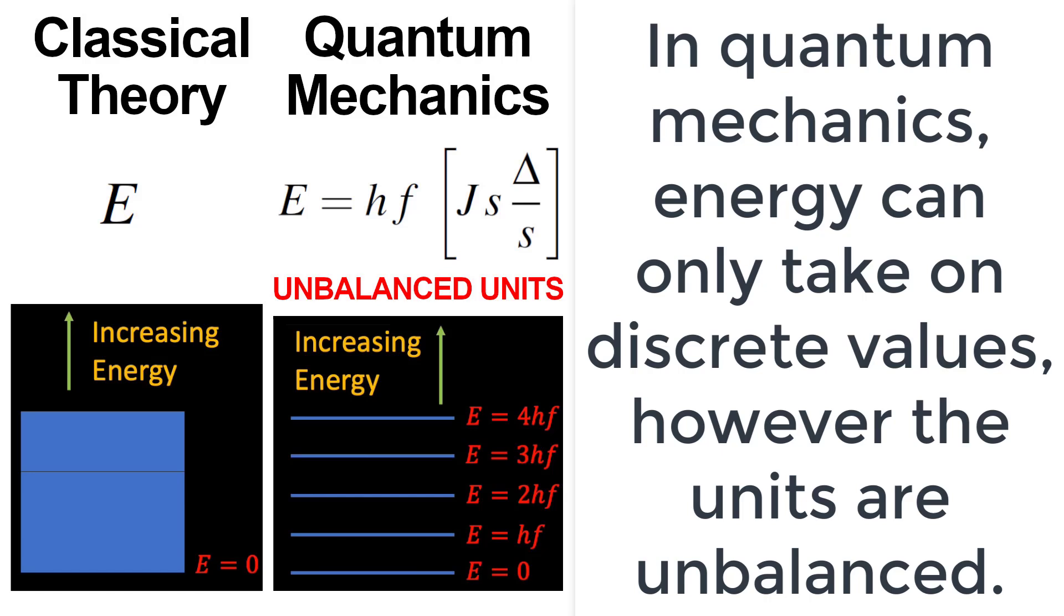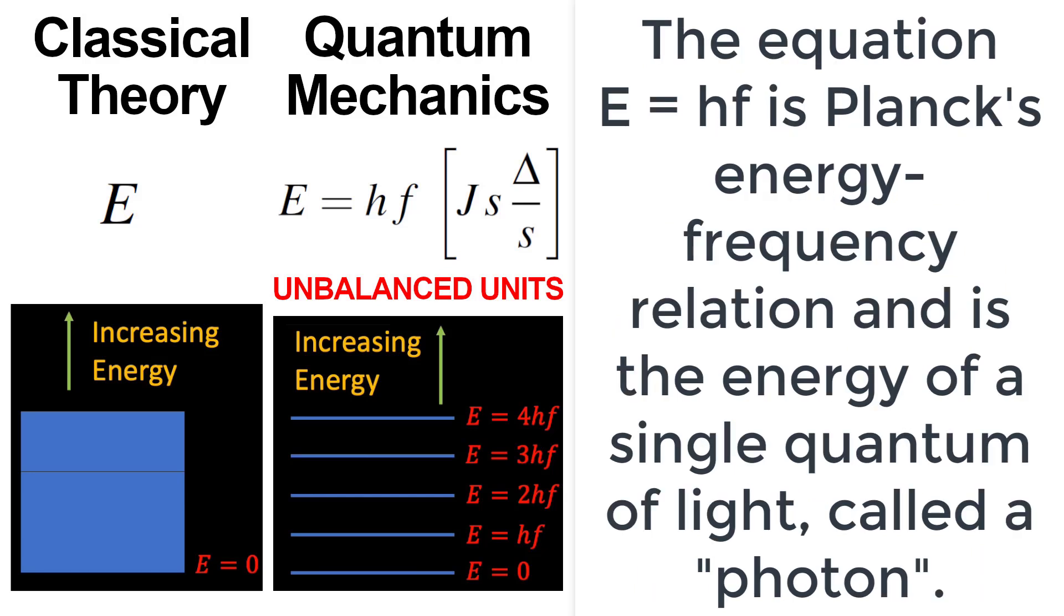However, the units are unbalanced. The equation E equals H times F is Planck's energy frequency relation and is the energy of a single quantum of light called a photon.